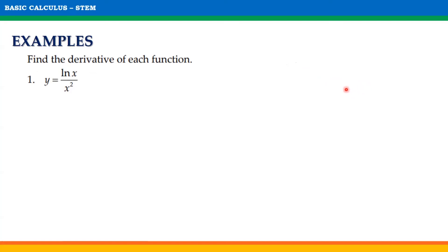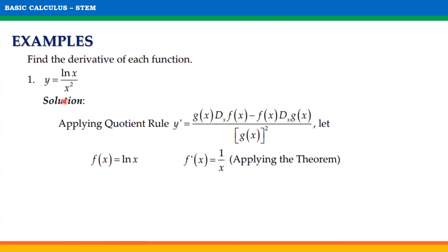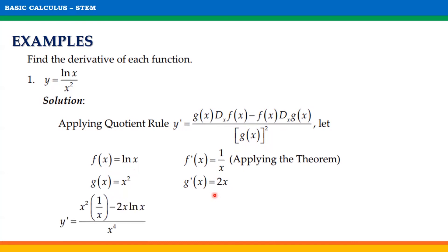For the first one, we have y = ln(x) / x². Let us apply the quotient rule: y′ = [g(x)·f′(x) - f(x)·g′(x)] / [g(x)]². Let f(x) = ln(x); applying the theorem, the derivative of ln(x) = 1/x. Let g(x) = x²; the derivative of g(x) = 2x. Substituting them on our formula above,